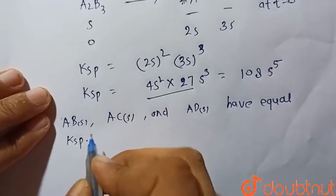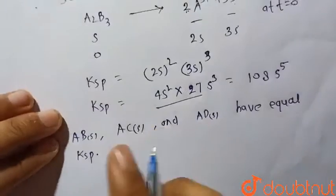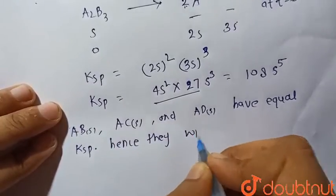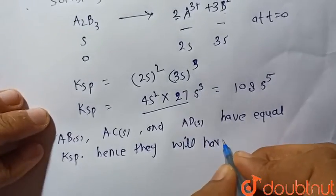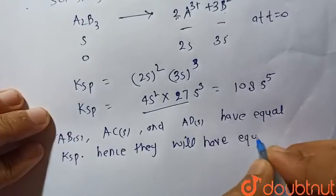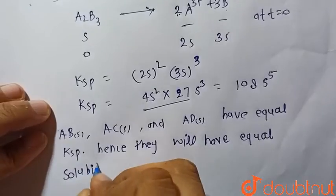And we have seen that solubility product is proportional to solubility. Hence they will have equal solubility also, because solubility product is proportional to the solubility.